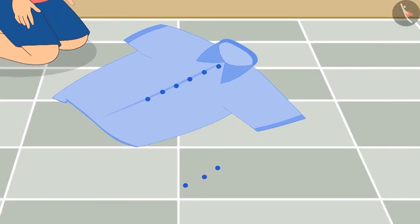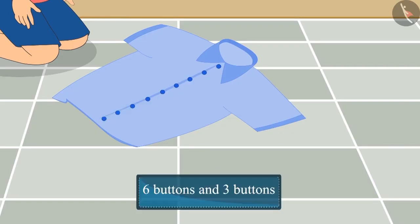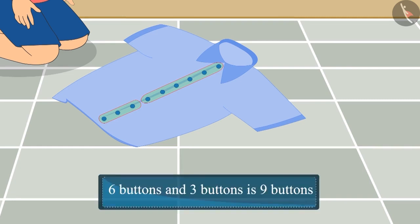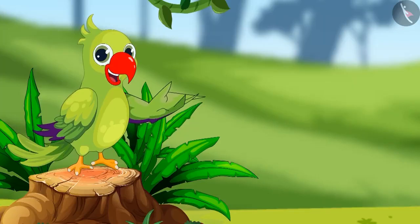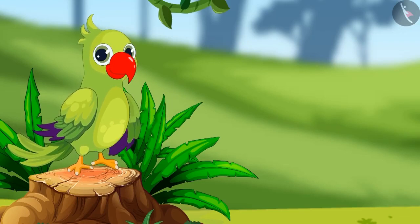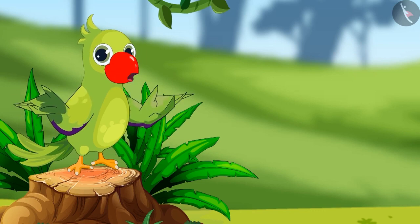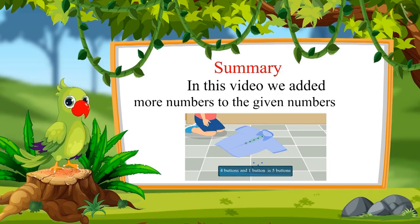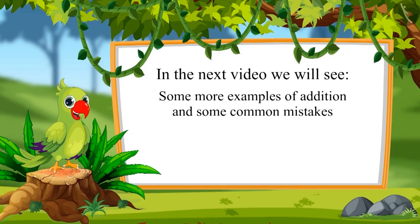In the end, Chotu stitched three more buttons on his shirt. Now there are six buttons and three more buttons. What is the total number of buttons? Yes — nine buttons! So children, I hope you had fun seeing the examples of addition. You too should look at things around you and try adding numbers to find the total. In this video we saw examples of addition where we added more numbers to given numbers.